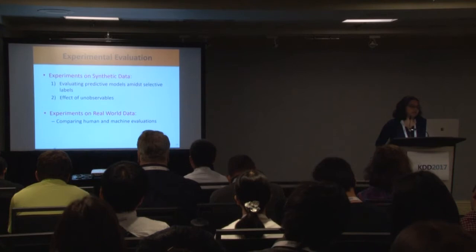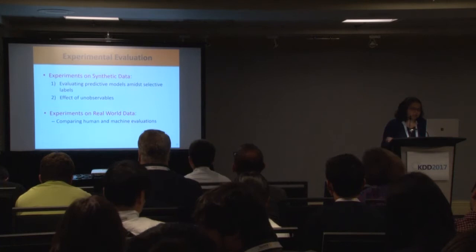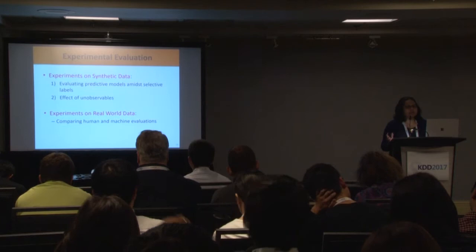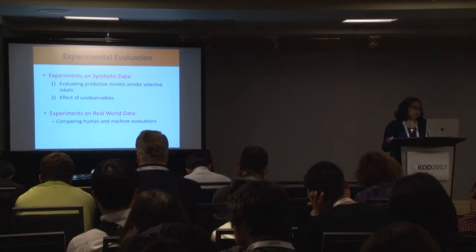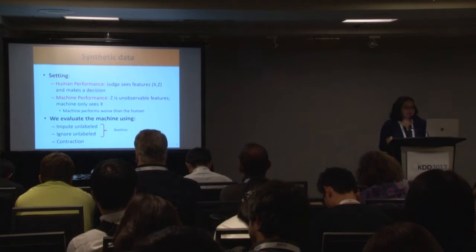Now for the experimental evaluation. We have two sets of experiments: first on synthetic data and then on real world data. On synthetic data, we show how various techniques evaluate predictive models amidst the selective labels problem and the effect of unobservables on evaluations. On real world experiments, we compare human and machine performance to see which is better on various datasets.